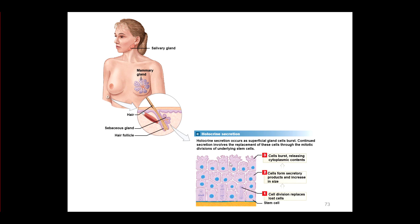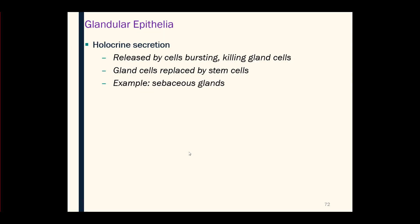As we lose the top cells, the cells at the bottom are stem cells that continually divide to give rise to new cells. You can see them in different stages of mitosis — metaphase, anaphase, telophase — in constant division as we lose the top cells. So we find holocrine secretion in sebaceous glands, which are oil glands. As we lose the cells, they are replaced by stem cells.